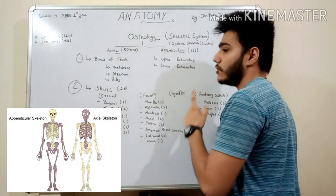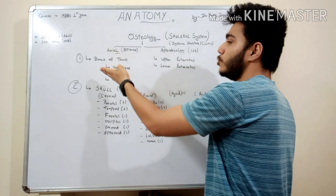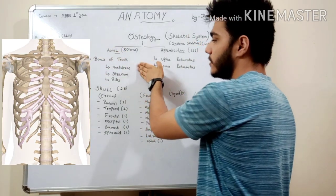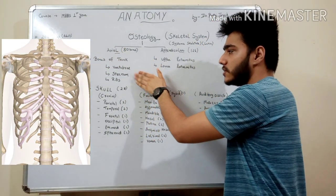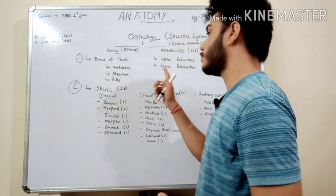As we can see in axial, there are two parts: bones of trunk, which consists of vertebrae, sternum, and ribs. And as we see in skull, it consists of 28 bones.